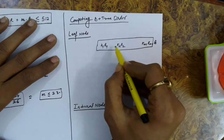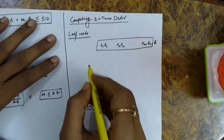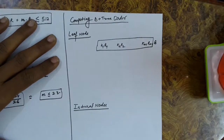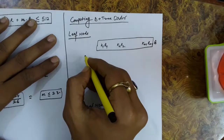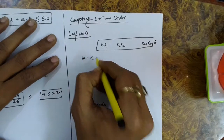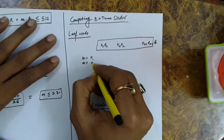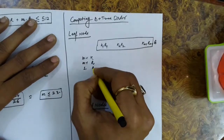So we have a key value and record address pair, along with the address of the next node. But there will be no child node address, because in the leaf node there will be no child of the leaf node. So: m-1 key values, m-1 record addresses, and only one block address.